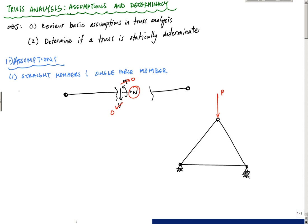The second assumption is that the members are connected by pins or hinges. That means at the end of each member there's a moment release, and that means moments can't be transferred from one member to another.